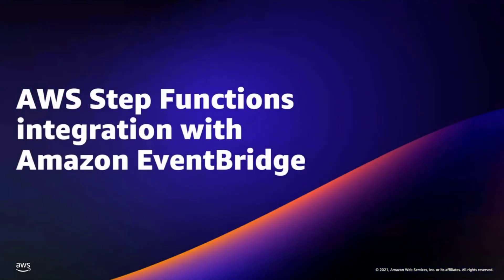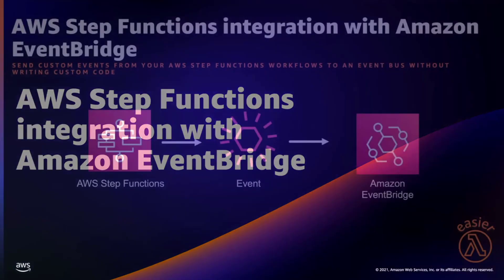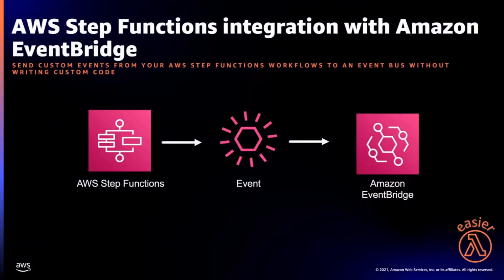Next, the Step Functions integration with EventBridge. Step Functions now supports an integration that lets you send custom events from your Step Functions workflows to an EventBridge event bus without writing custom code. Publishing events inside workflows decouples orchestration logic and replaces the need for Lambda functions to call the EventBridge APIs. Now Step Functions can call EventBridge directly — no need to go through Lambda. This is another way we're making serverless development easier.